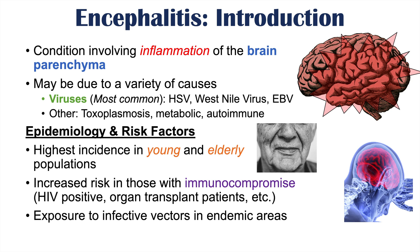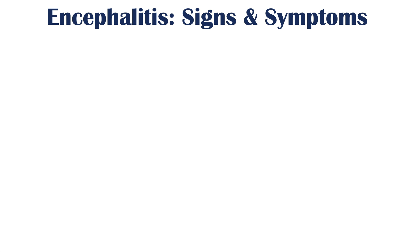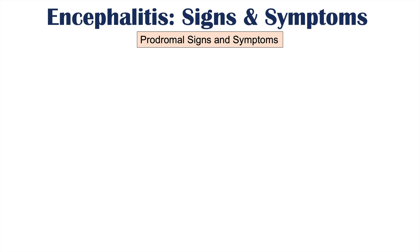Another risk factor for encephalitis is being exposed to infective vectors in endemic areas. If you travel to a country where mosquitoes carry West Nile virus or dengue virus — another cause of encephalitis — you're more likely to get infected. Now, the topic of this lesson is that encephalitis causes a particular set of signs and symptoms, which we'll cover in the upcoming slides.